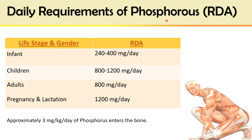Daily requirements of phosphorus — Recommended Dietary Allowance (RDA): For infants, 240–400 mg/day; for growing children, 800–1200 mg/day; for adults, around 800 mg/day; during pregnancy and lactation it is increased to approximately 1200 mg/day. Approximately 3 mg/kg/day of phosphorus enters into the bone.